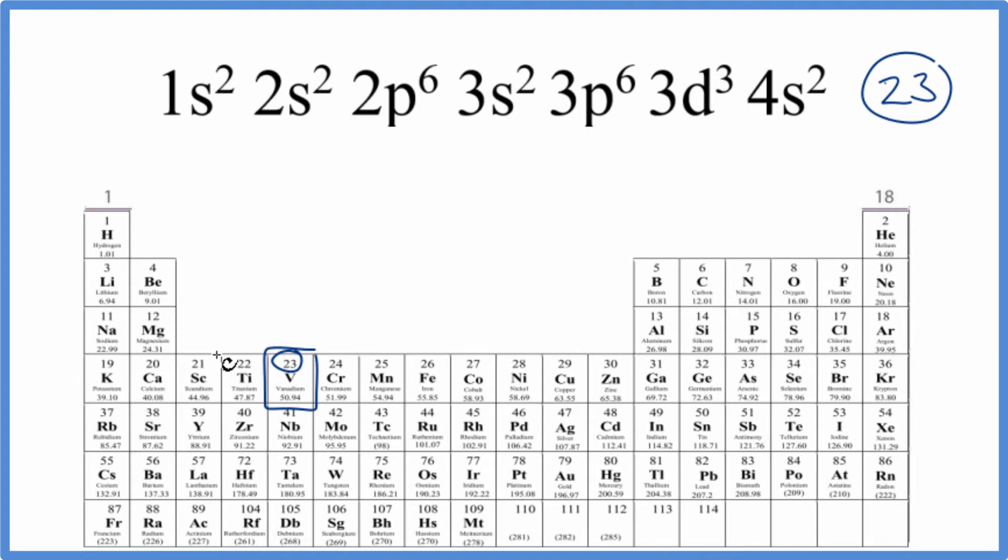We could find the noble gas before vanadium. So we go back, it's 23, so we go back, here's the noble gas argon right here. So instead of writing these 18 electrons, we could just write Ar in brackets. And that would look like this right here.